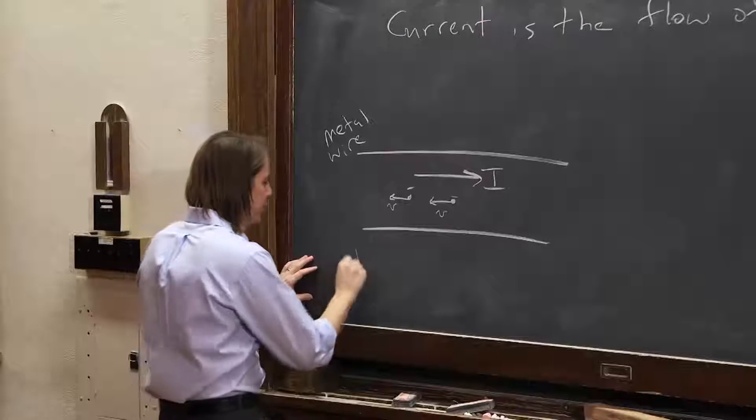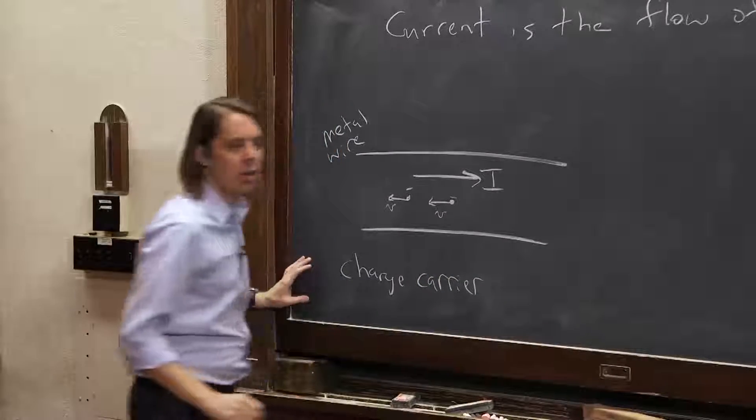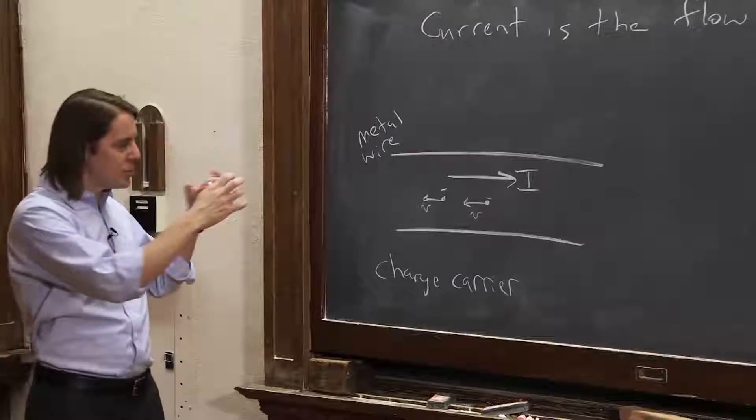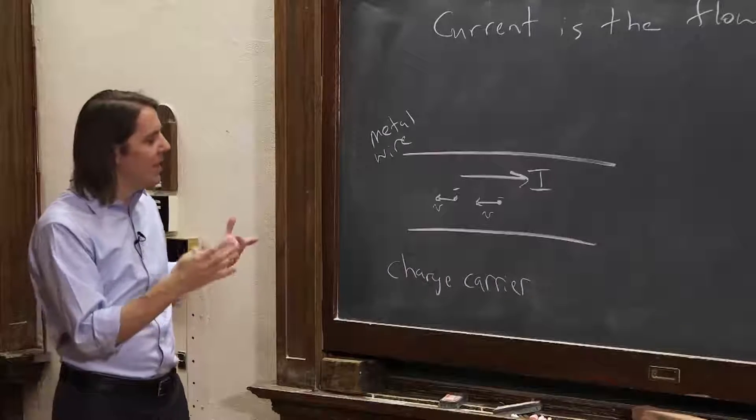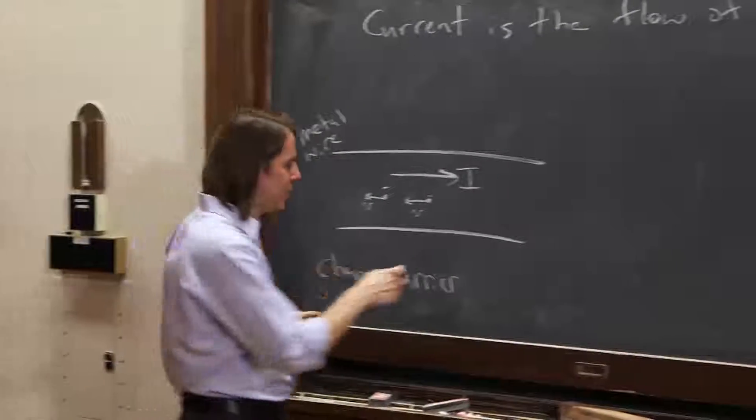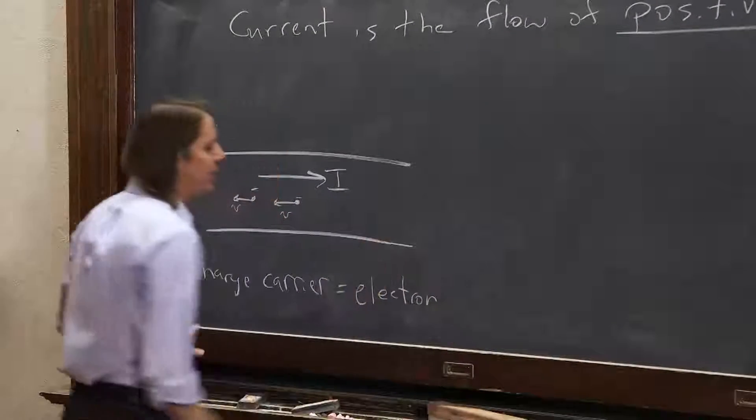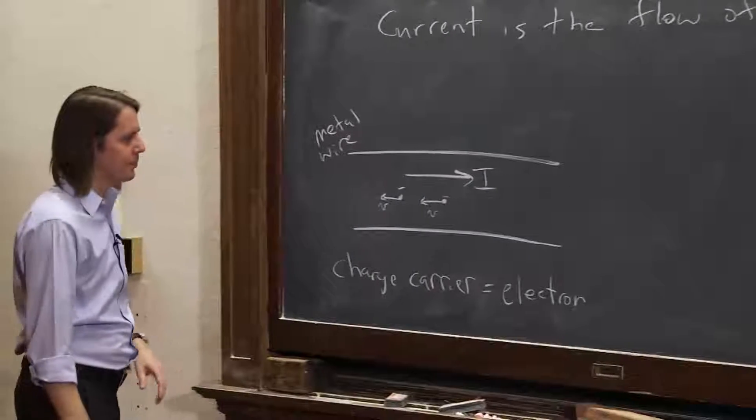We call those particles the charge carrier. So if you're ever unsure which way real particles are moving, or which way the current is going, if the charge carrier is negative, then it's opposite of the current. So here, the charge carrier is the electron, and you know that the electron is negative.